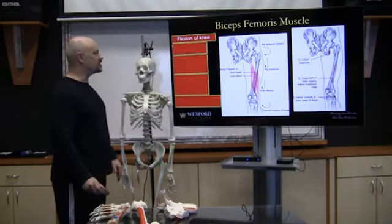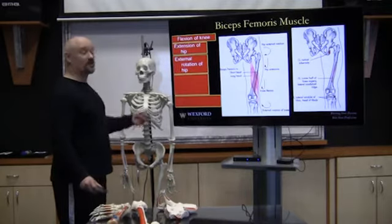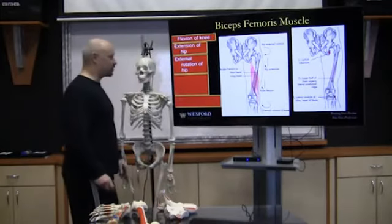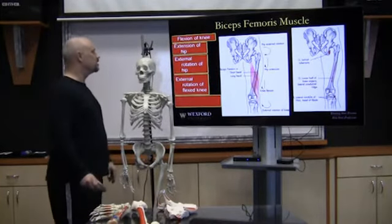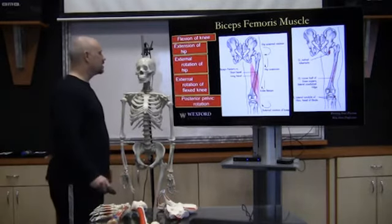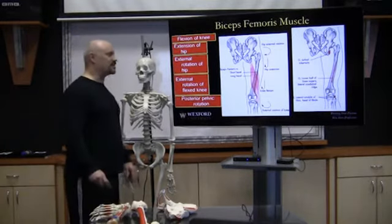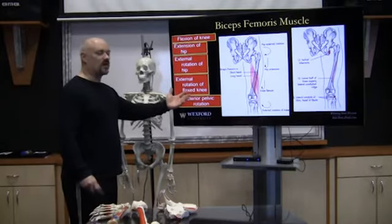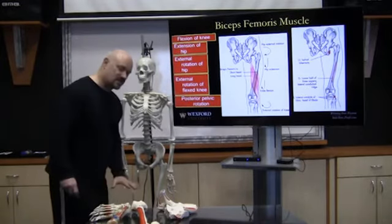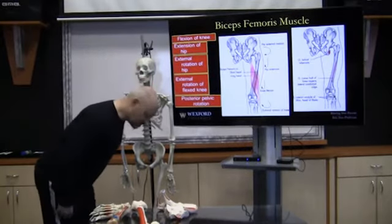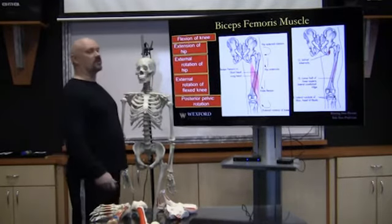The biceps femoris does flexion of the knee, extension of the hip, and external rotation of the hip — because it's located on the outside it causes external rotation, plus external rotation of a flexed knee, and posterior pelvic rotation. It's part of the hamstring group, so with the feet fixed it will also cause trunk extension.